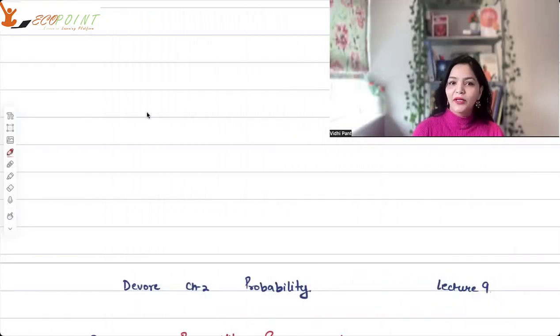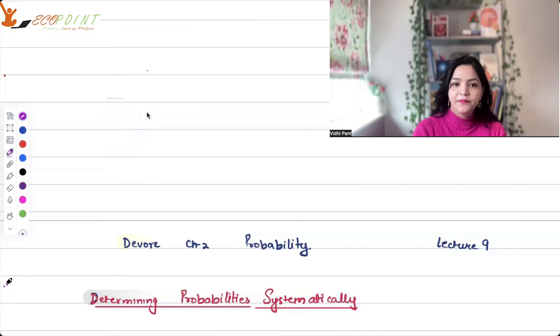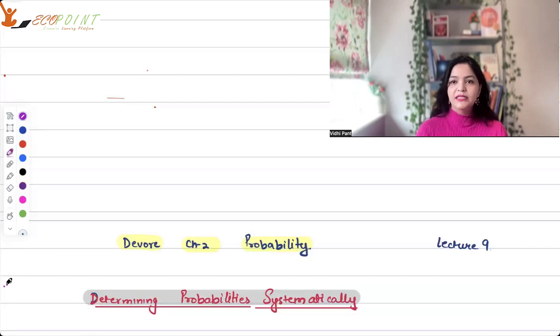Hey guys, welcome to another lecture from EgoPoint. What I'll be discussing today is regarding probability and a specific part to it. We are starting our journey in order to calculate probability under various circumstances. So I'm going to start off the concept of determining probabilities systematically. Previously, we have already worked on the concept building regarding probability. We know what probability is. Probability is associated to relative frequency. It is associated to chance.